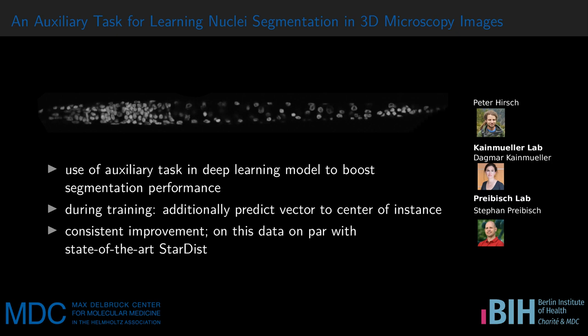The use of auxiliary tasks in deep learning models is a popular way to boost performance. We apply one to the task of nuclei instance segmentation in 3D microscopy images. During training we additionally predict per pixel a vector to the center of its instance. We show that this leads to a consistent improvement for multiple baseline models.